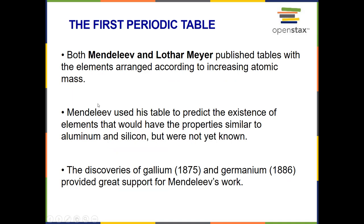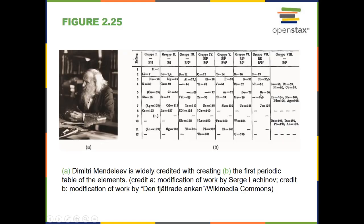Now both of them published tables with the elements arranged according to increasing atomic mass. Mendeleev used his table to predict the existence of elements that would have properties similar to aluminum and silicon, but those elements weren't yet known. So when gallium and germanium were discovered, it supported his work greatly. And that's basically how he became the father of the periodic table. Here's just an image of his notes, his construction of the original periodic table, and here's a picture of the guy himself.